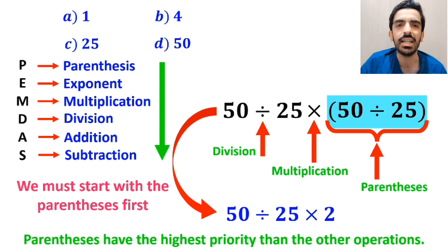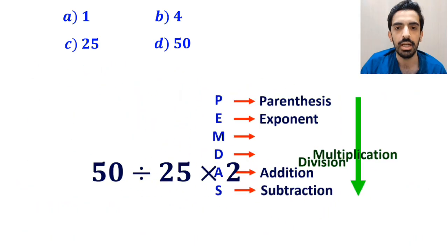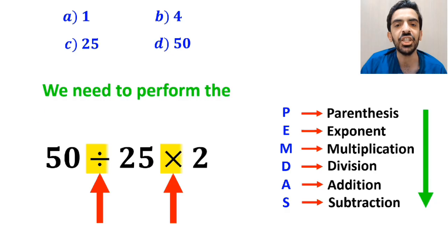So, we can rewrite this expression as 50 divided by 25, then times 2. Now we need to perform the division and multiplication.